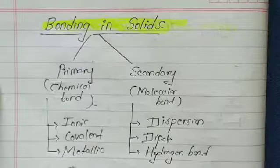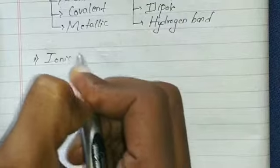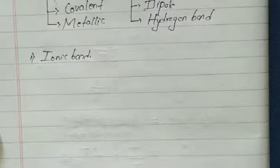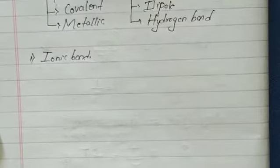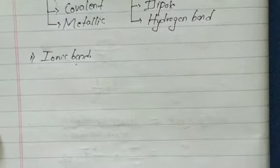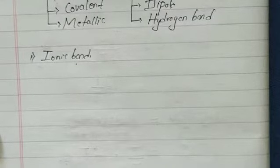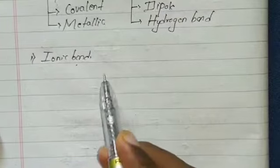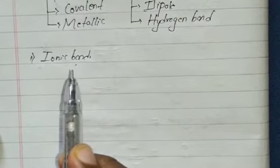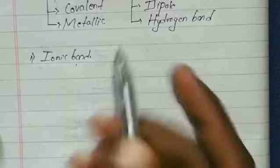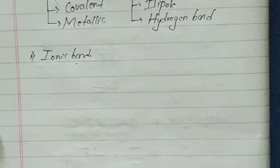Let's see these one by one. The first one is the ionic bond. When we think of ionic bonds, we think of salt — NaCl. Salt is an inorganic compound, and ionic bonds are mainly formed in inorganic compounds like NaCl or potassium hydroxide (KOH). If you have a pure element, it will not form the ionic bond — it's only formed in inorganic compounds.